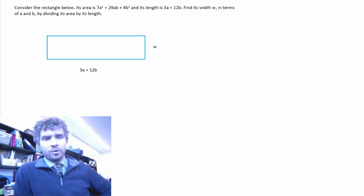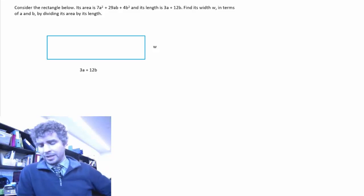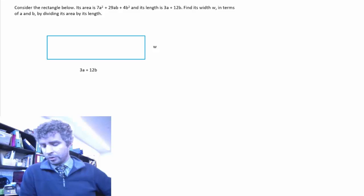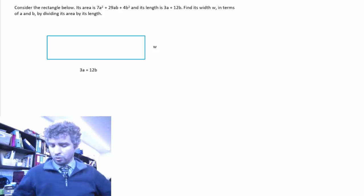We've got this problem that says, consider the rectangle below. Its area is 7a squared plus 29ab plus 4b squared. And its length is 3a plus 12b, as shown.